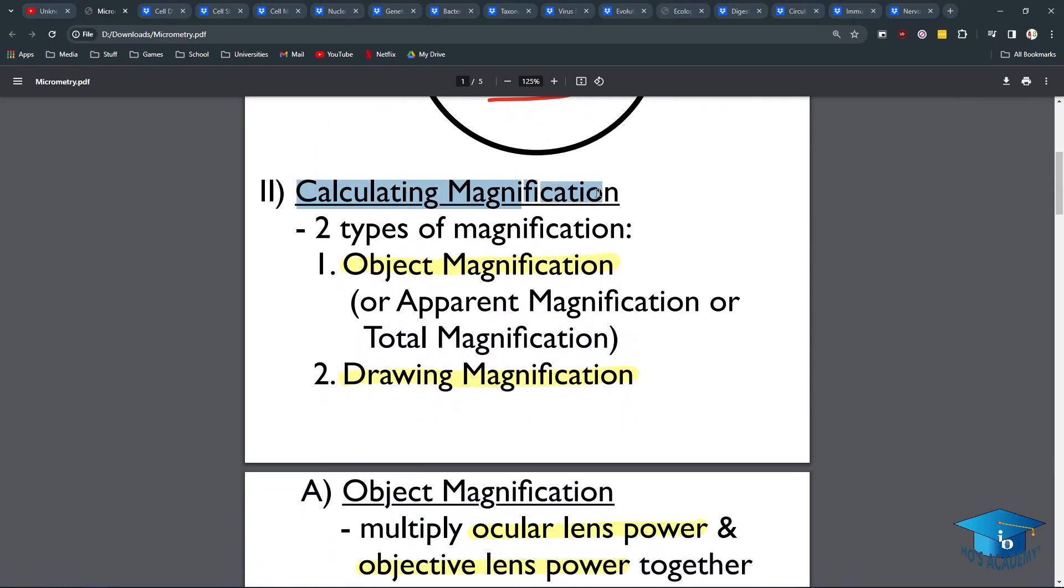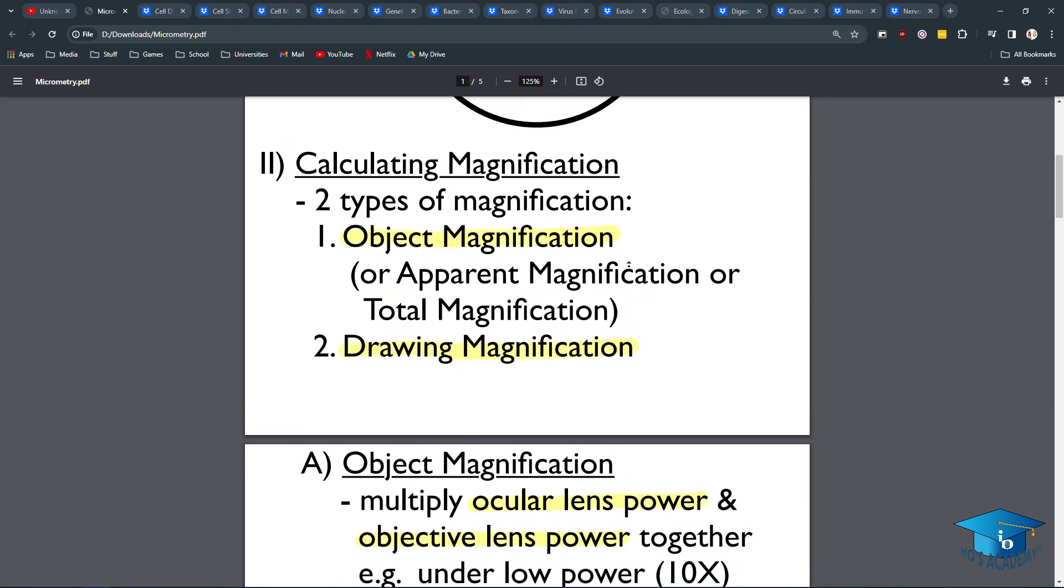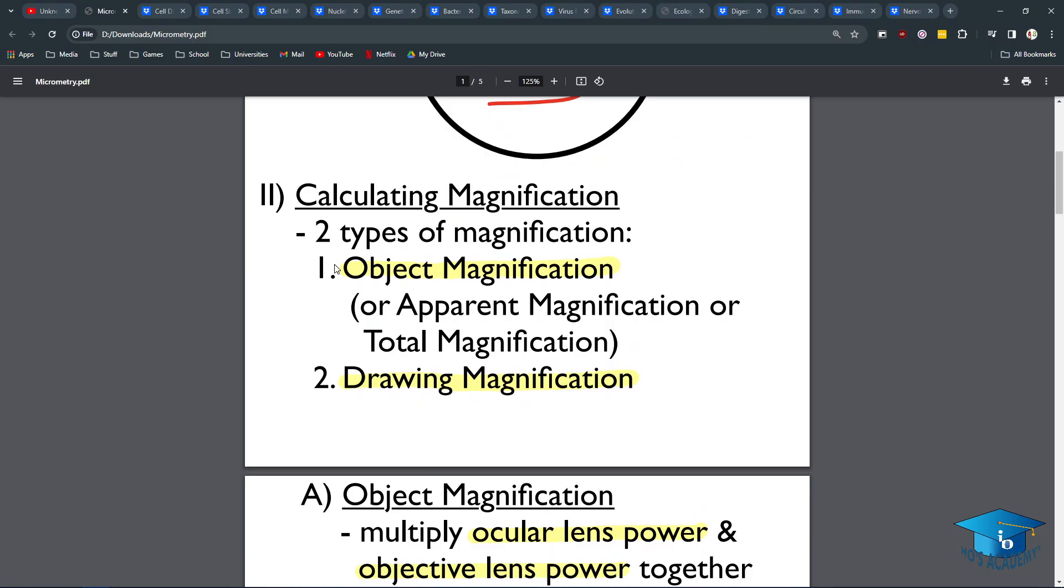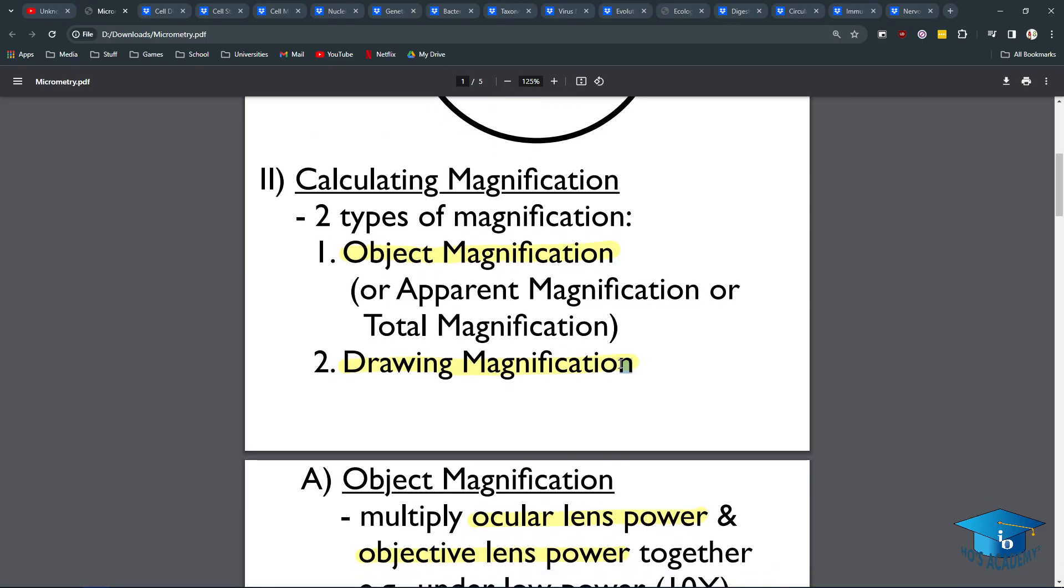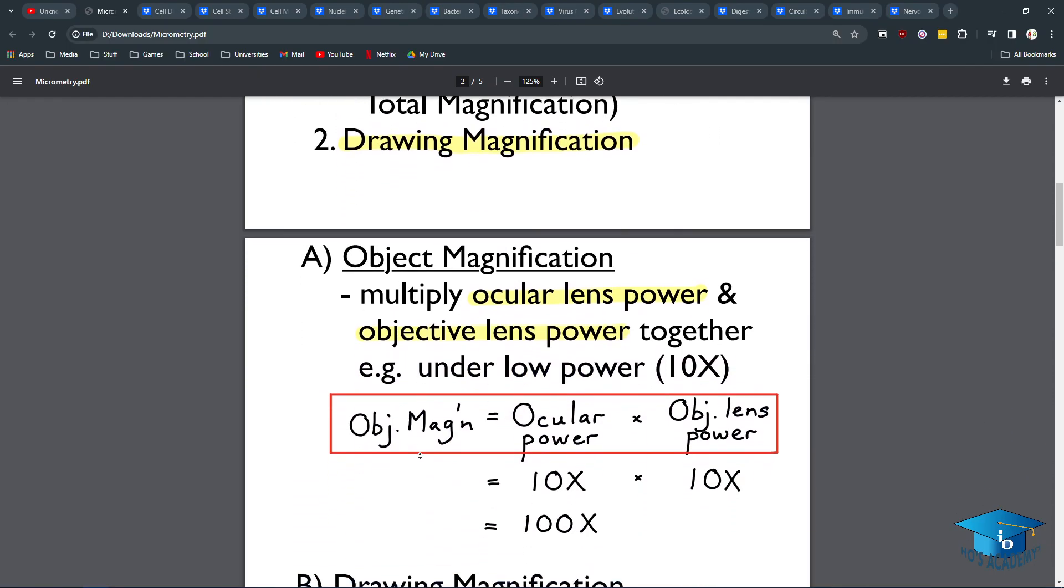What's important is calculating the magnification. I don't know why there are so many questions where you have to calculate the scale, go backwards, or find out what size the real thing is. But there's object magnification and drawing magnification.